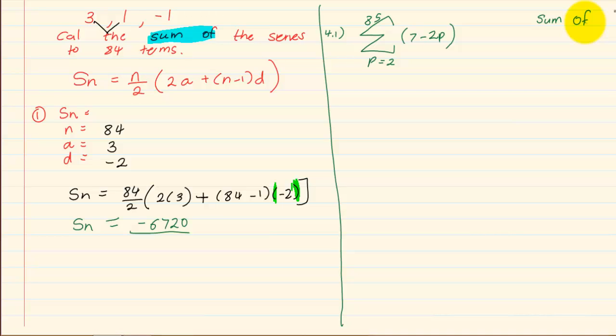But in a sigma notation we are not told whether it's arithmetic or geometric. Therefore when you have a sigma notation the first rule is to get the first three terms. We get the first three terms by substituting 2 and then substituting 3 and then substituting 4. So we have 7 minus 2 into 2 which equals 3.